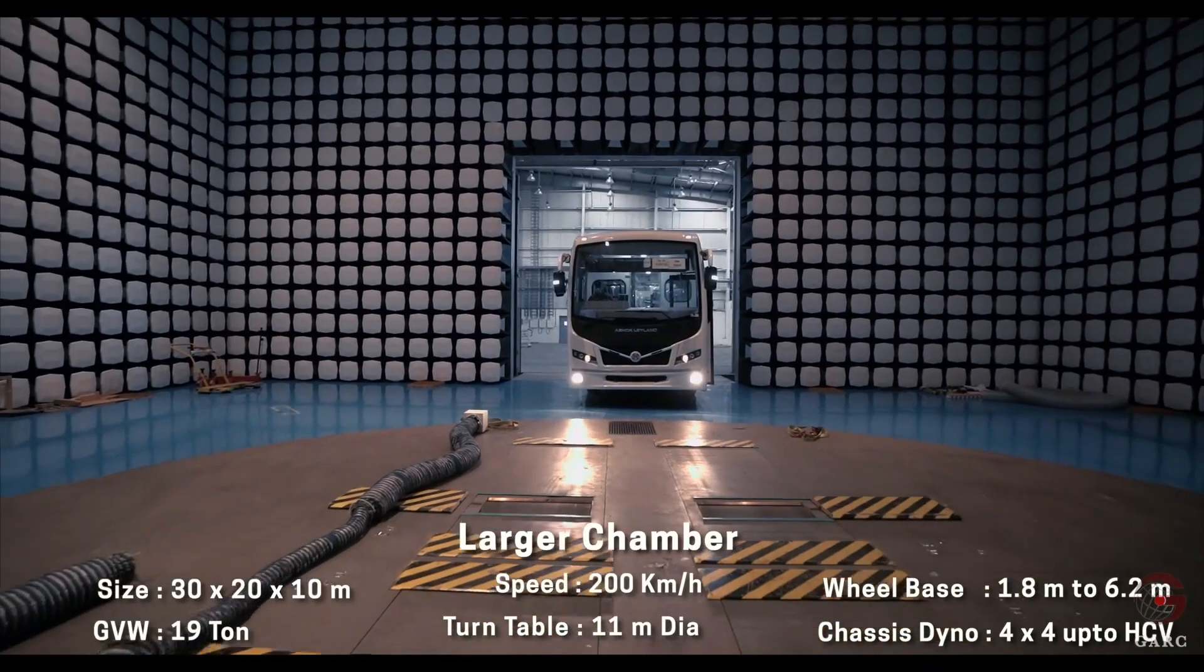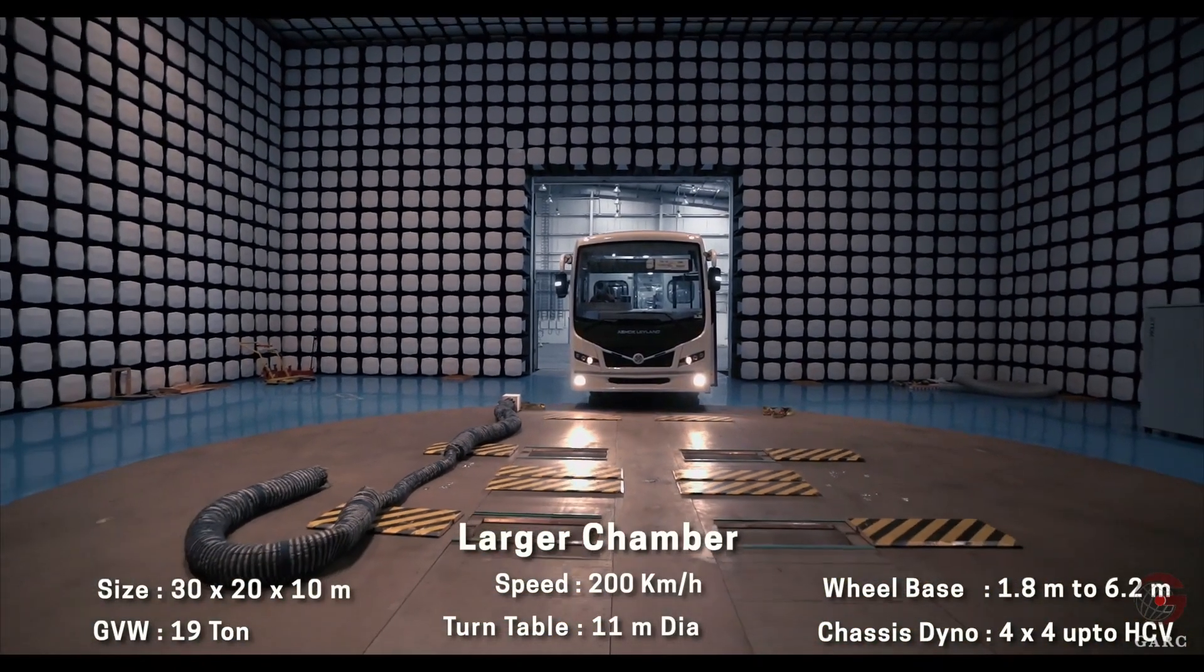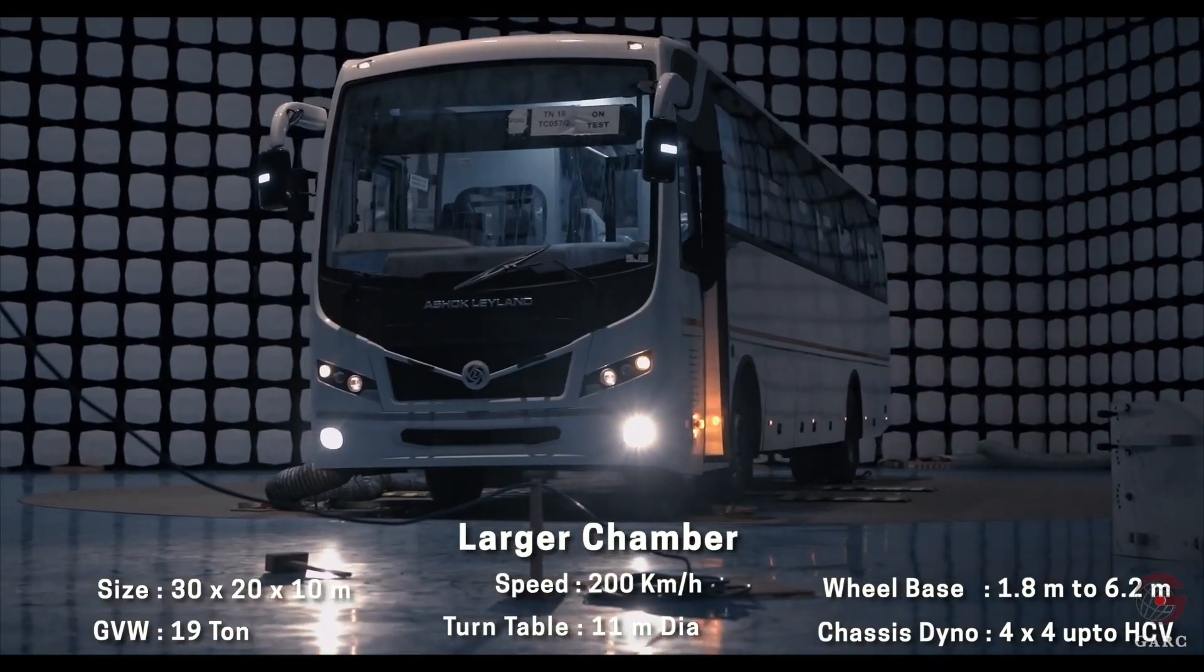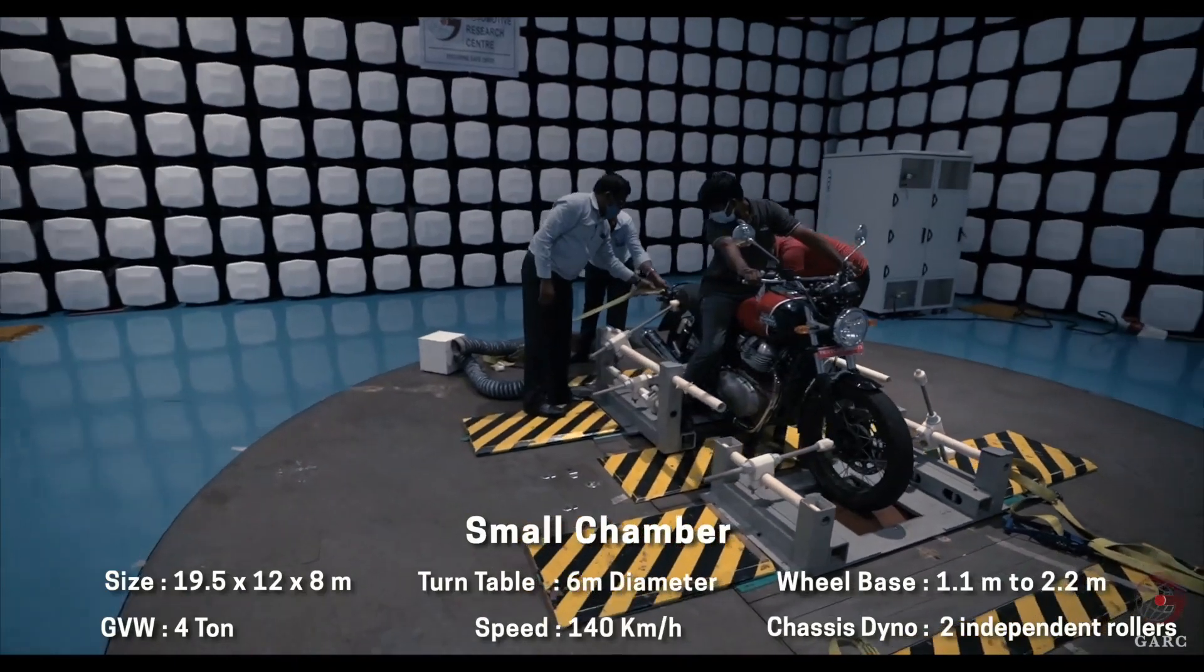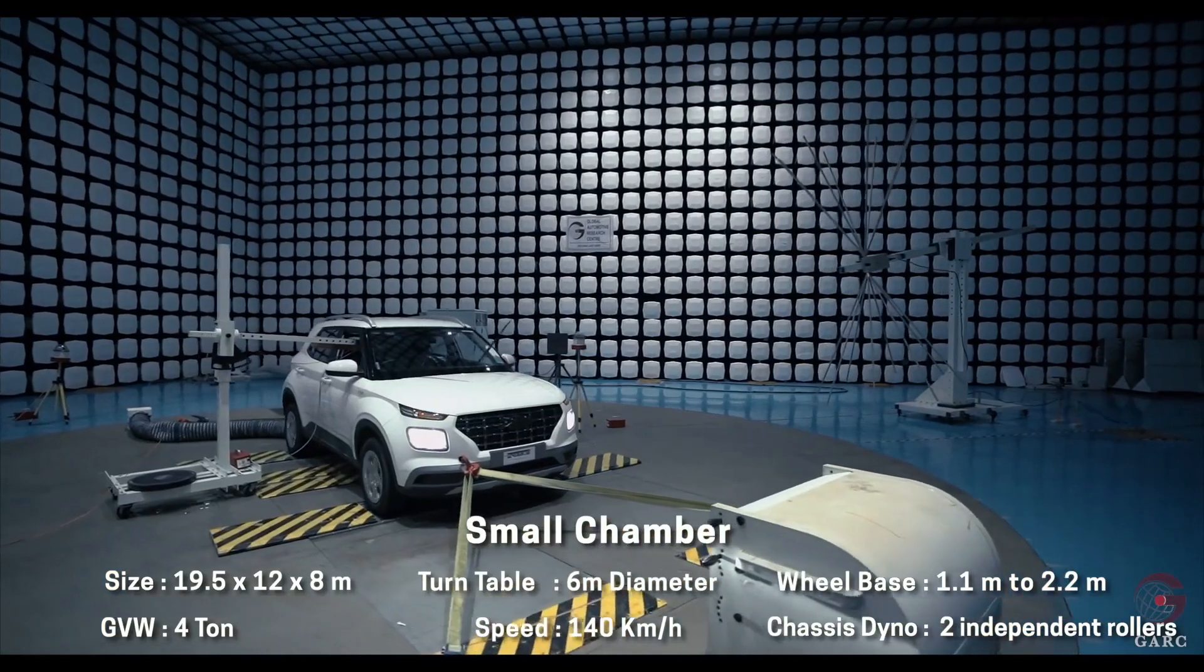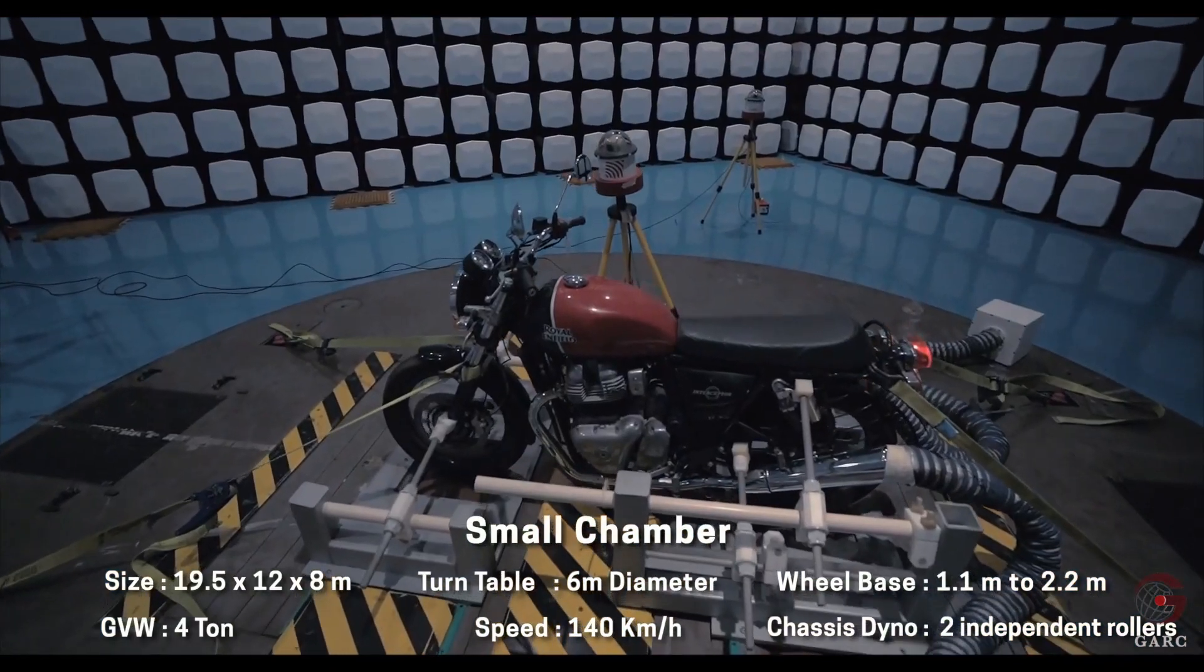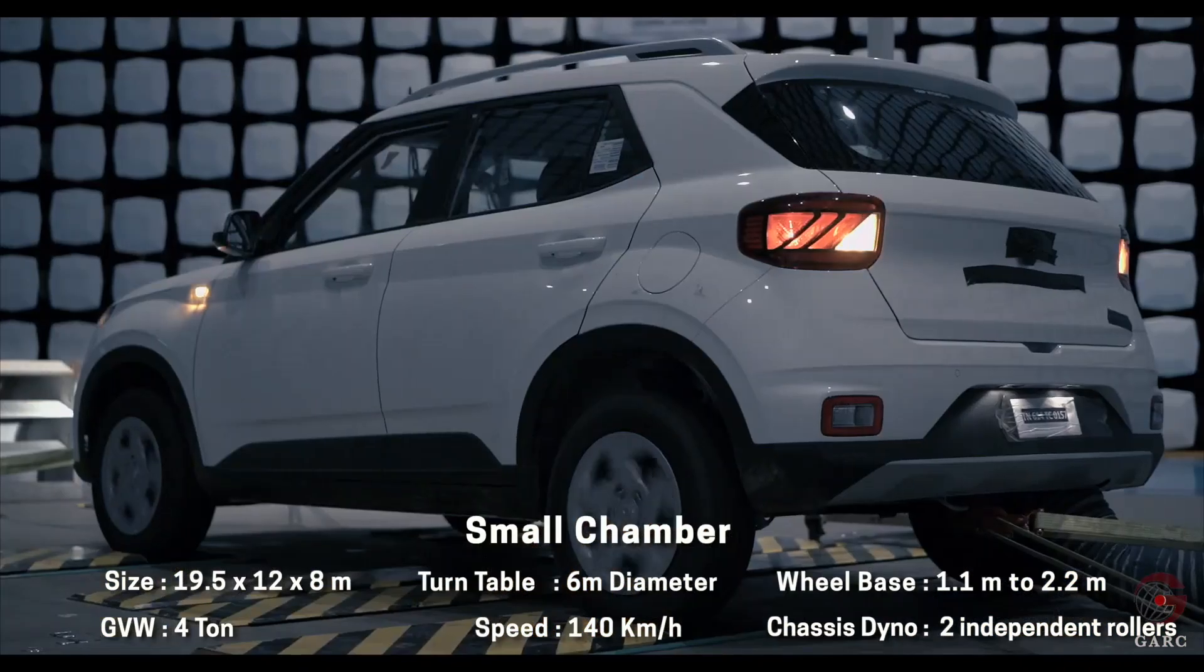The larger chamber is used for light and heavy commercial vehicles with an 11 meter diameter turntable integrated with chassis dynamometers. Similarly, the small chamber is used for 2 and 3 wheeler testing which has a 6 meter diameter turntable integrated with chassis dynamometers.